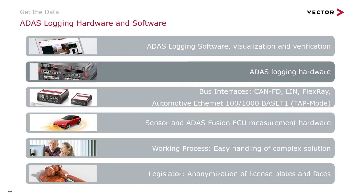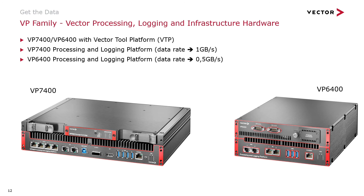Let's talk about the ADOS logging hardware. We have a completely new hardware platform called VP. We have two PCs: the VP7400 and the VP6400. Both are industry PCs designed for use in vehicles. One important difference is the data rate — the VP7400 has a data rate of about one gigabyte per second, and the VP6400 is about 500 megabytes per second.